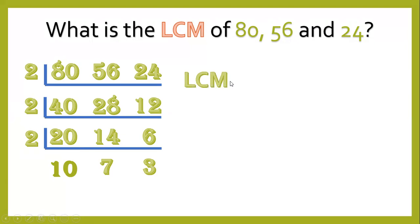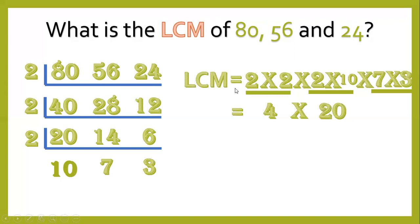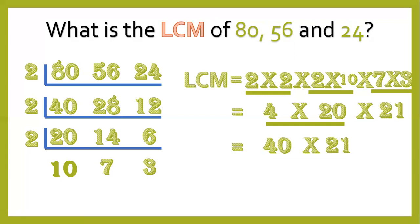So LCM equals 2 times 2 times 2 times 10 times 7 times 3. 2 times 2 equals 4; 2 times 10 equals 20; 7 times 3 equals 21; 4 times 20 equals 80; 80 times 21 equals 840. So 840 is the final answer.